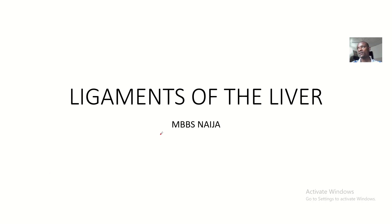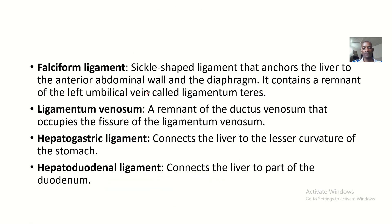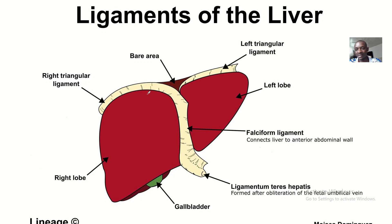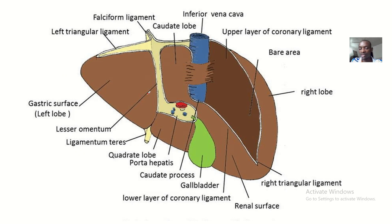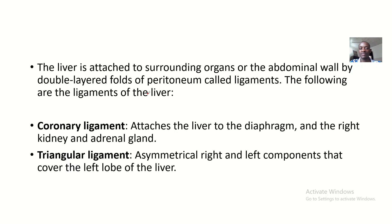What's up guys, today we'll be talking about the ligaments of the liver. Every student of anatomy must have a good understanding of the liver — it has so many ligaments, and staff usually use this to test whether students really have the knowledge of anatomy. The liver is attached to surrounding organs or abdominal wall by double-layer folds of peritoneum called ligaments.